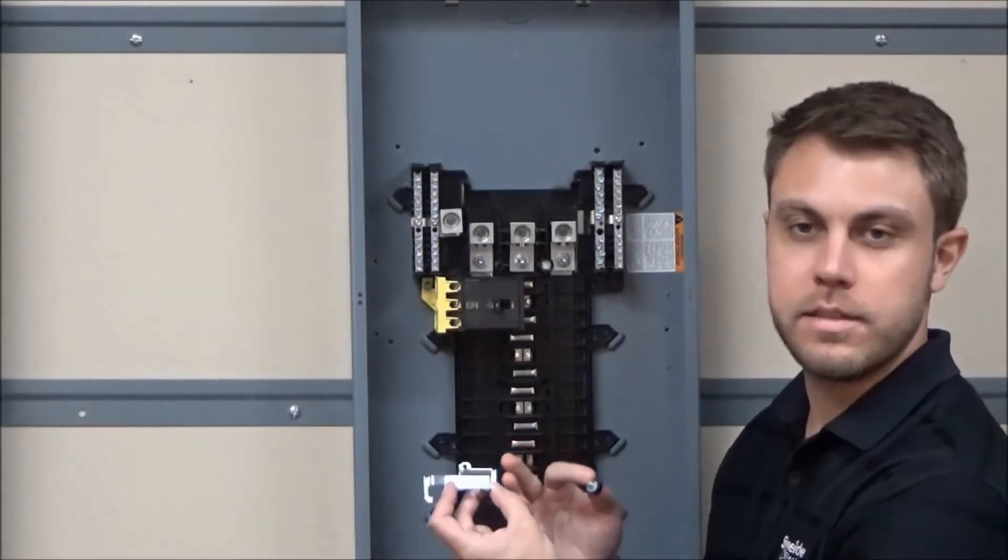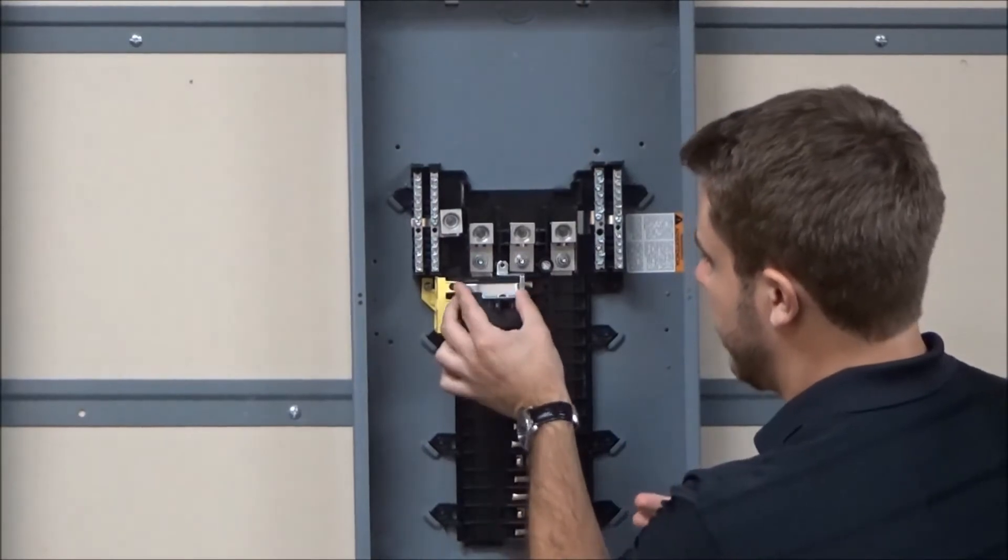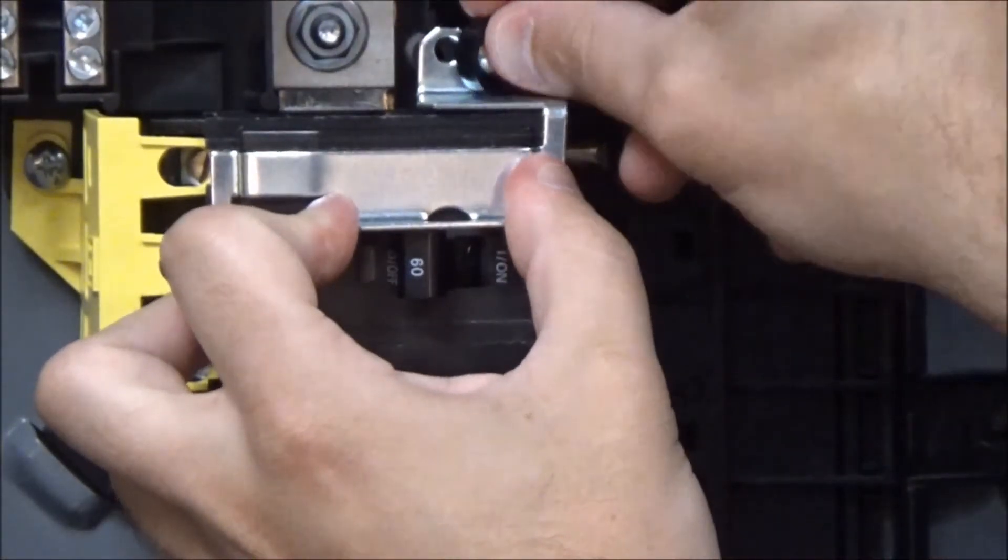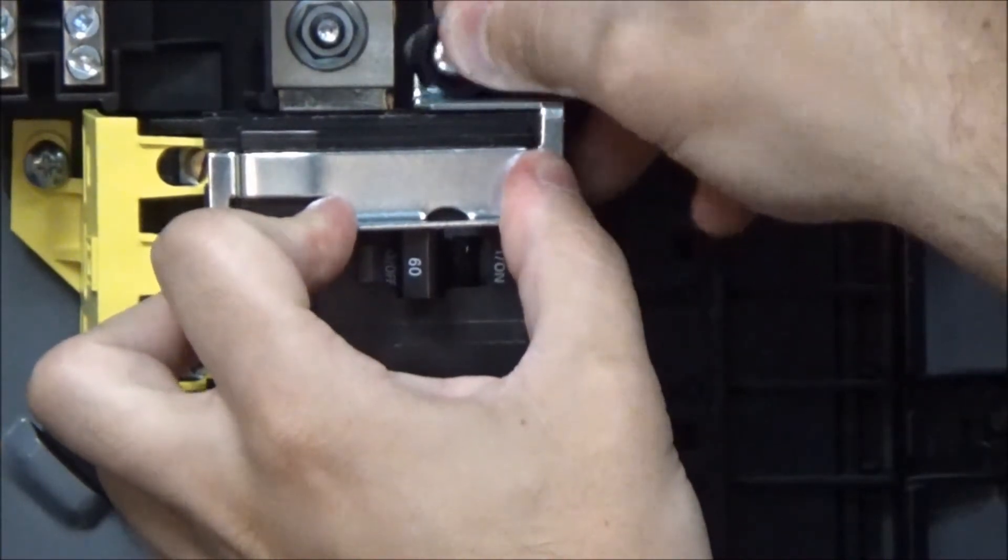Next you will take the hold down bracket, place it on the main breaker, and install the mounting screw with an insulating washer onto the hole on the main phase barrier.